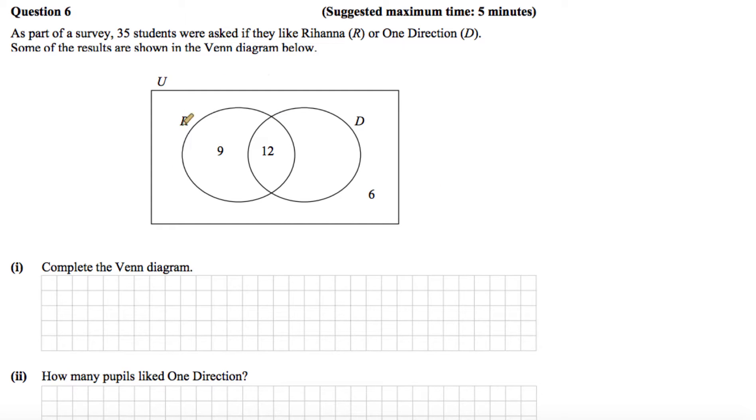So we have our universal set here. We have the set R for Rihanna here and the set D for One Direction here. And we can see from this that there's 12 people who like both Rihanna and One Direction. These 9 people here like Rihanna only and these 6 here don't like Rihanna or One Direction.